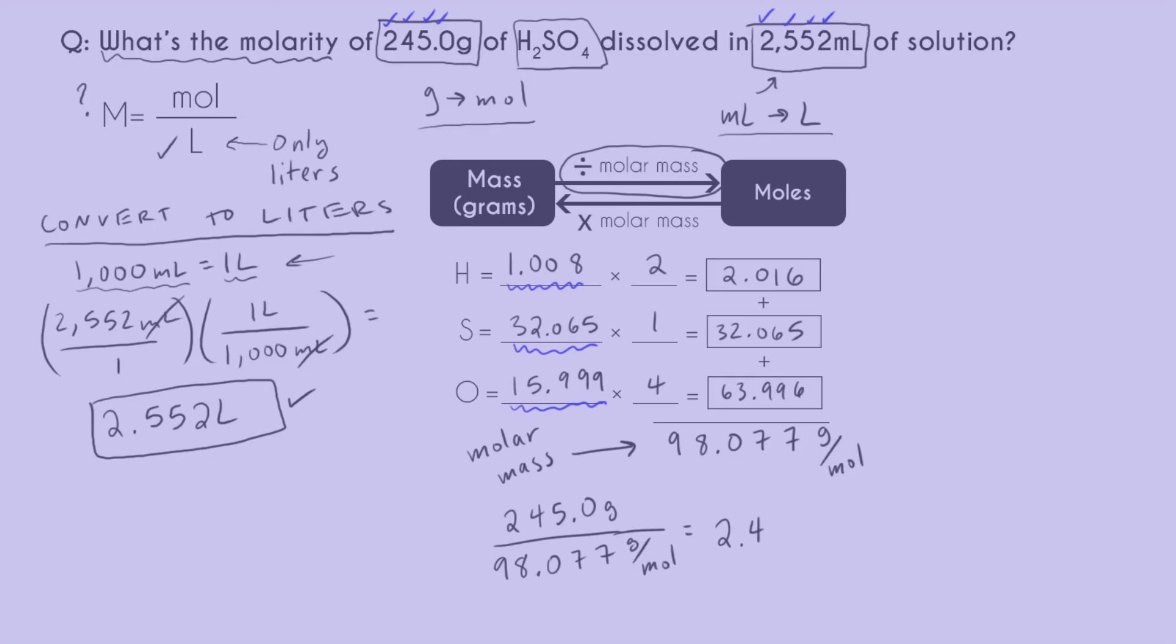Now we can go ahead and divide. Again, not caring about sig figs yet. I get 2.4980 mole. My units for this, grams cancelled out, and then moles flipped up from being on the denominator of the denominator to being all the way up in the numerator.